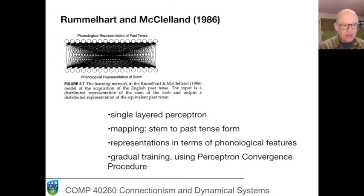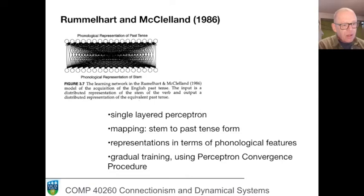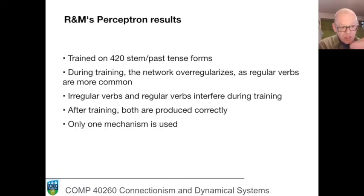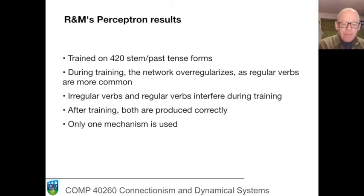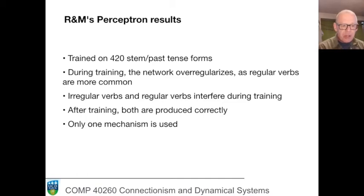It was trained gradually using the perceptron convergence procedure. The underlying question is: are there stages with different forms of learning, or is there a single generic learning mechanism? The network was trained on 420 combinations of stem and past tense. During training, the network was found to over-regularize — to start generating past tense forms derived by the rule that adds 'ed'. There seemed to be an interaction between irregular and regular verbs during training. After sufficient training, both irregular and regular forms were produced correctly, and only one mechanism was used. So this looks like a significant contribution showing you don't need separate learning mechanisms to produce this non-linear acquisition profile.